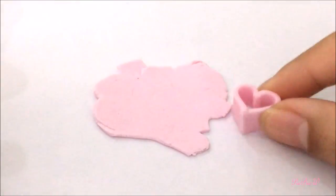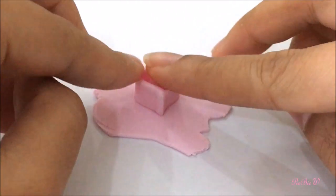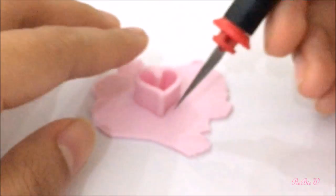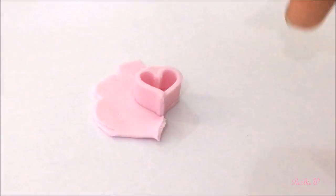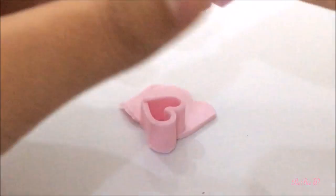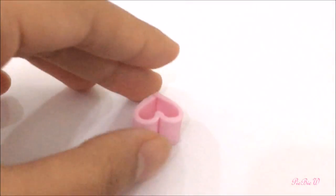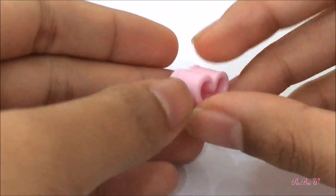Afterwards flatten out another piece of clay with the same color and press on the heart box. And cut around it so we'll be having a base for our box. Then you can blend it in using your fingers or a blending tool.